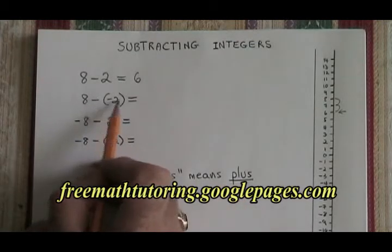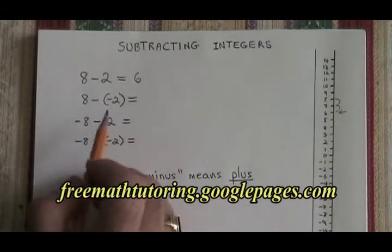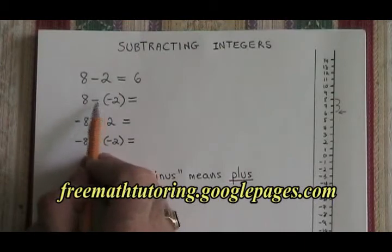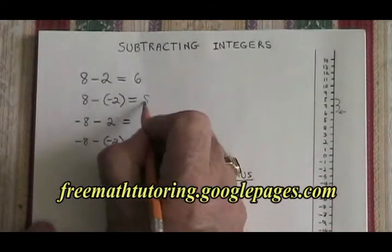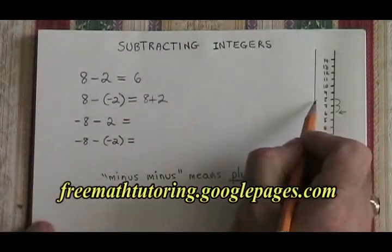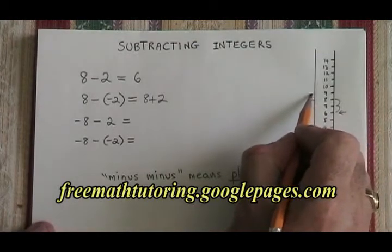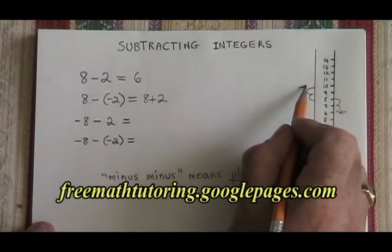Really, the two negative signs cancel into a plus sign. So our starting point is 8 and we are adding 2. On the thermometer, starting point is 8. We add 2. We end up at 10.